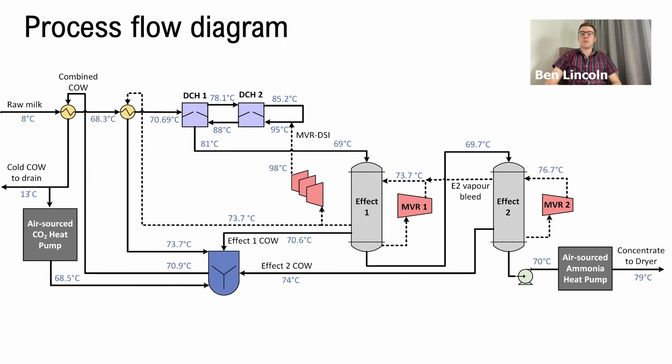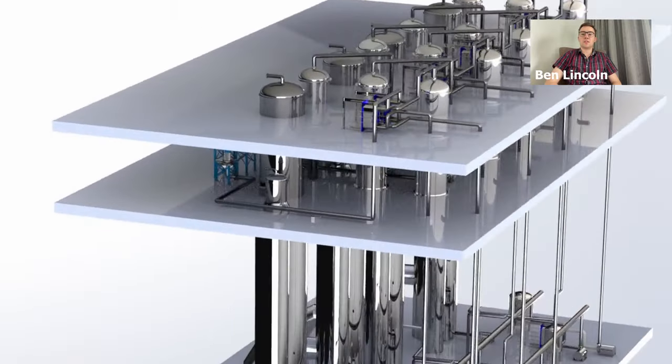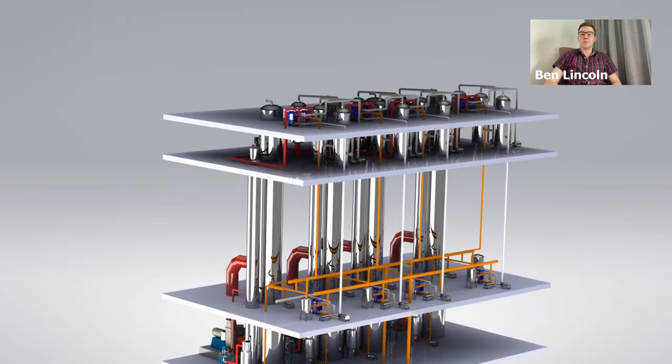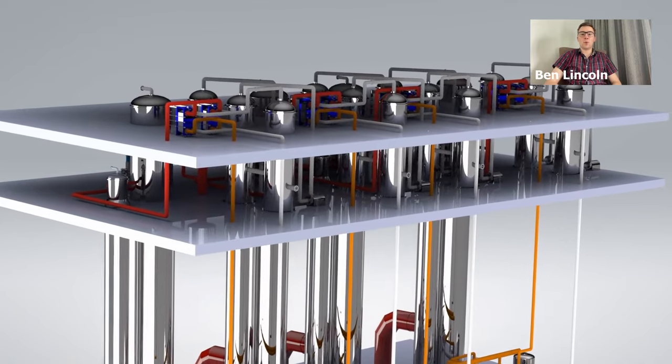The key features of this process design include the use of two direct contact heaters for fast heat transfer and process simplicity, as well as a three-stage vapor fan that upgrades excess vapor in order to substitute steam that would have been traditionally supplied from a fossil fuel boiler.